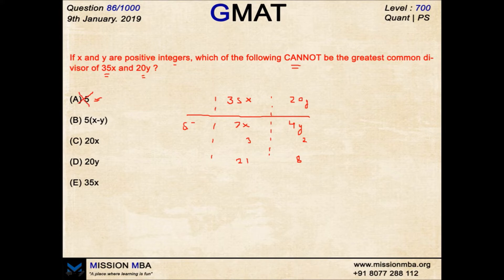Second option: 5 into X minus Y. Now this particular option is difficult to eliminate, but we have already seen that 5 can be the highest common factor. So if I make this X minus Y equal to 1, then again I'll have 5 as the common factor. And when can you make X minus Y equal to 1? When they are consecutive integers. And look at here, 3 and 2. Here X minus Y also satisfies 1. So of course the HCF can be 5 into X minus Y when X is 3 and Y is 2. You can discard this option also.